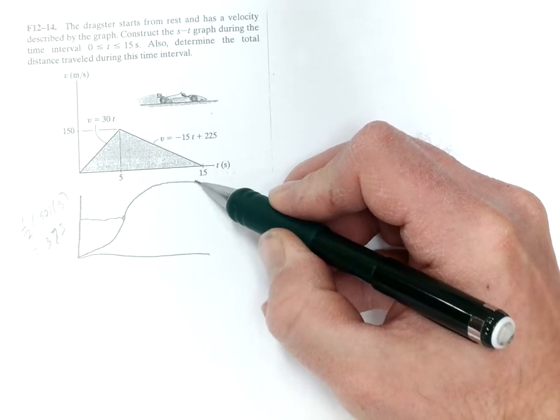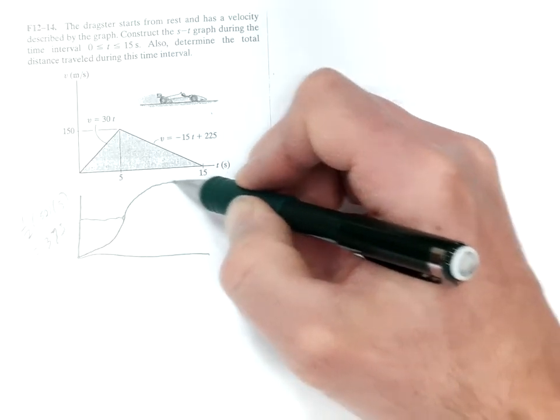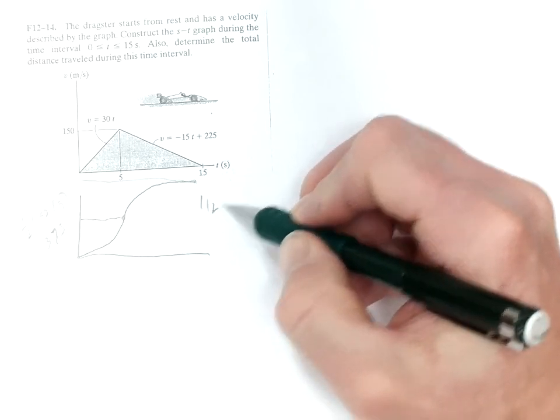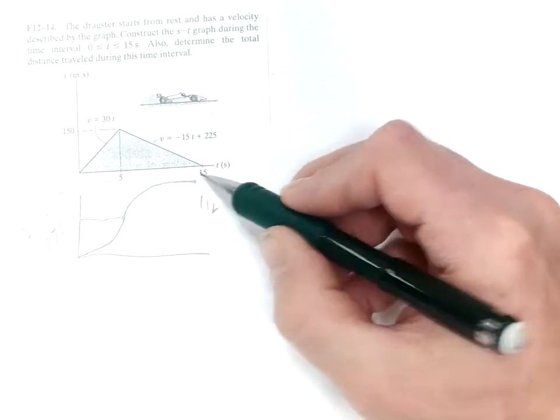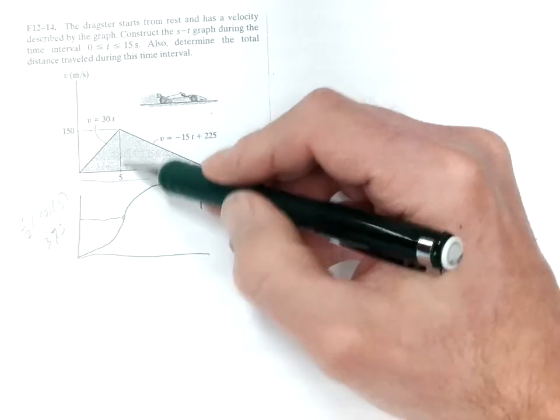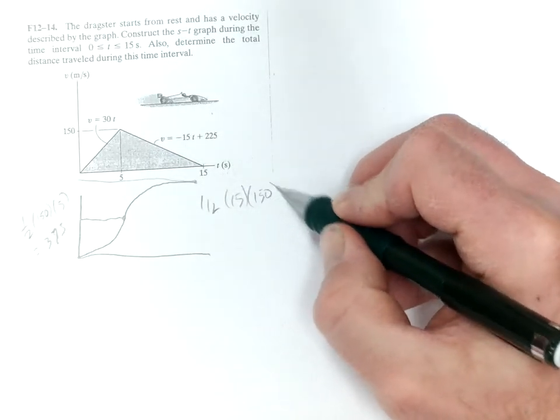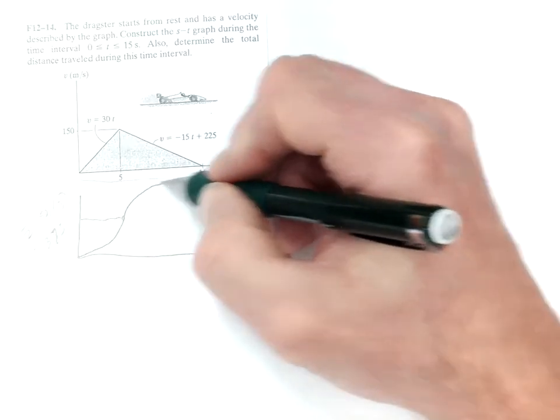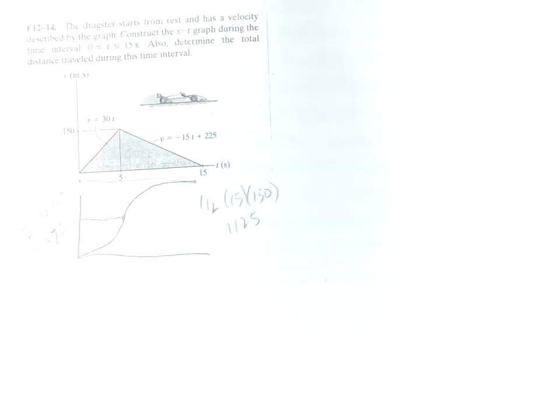And then for the final, we would just use one-half of 15 times 150, and we get 1125 for the final distance.